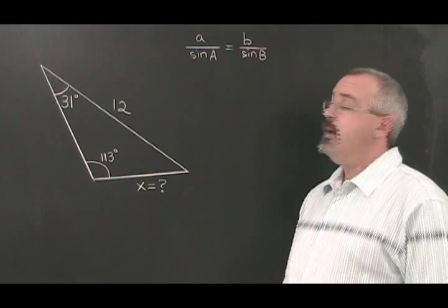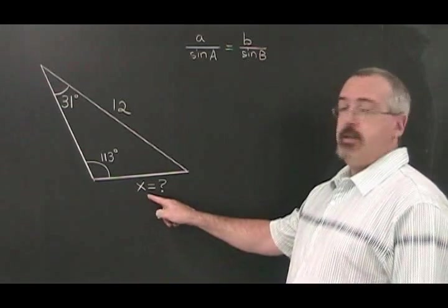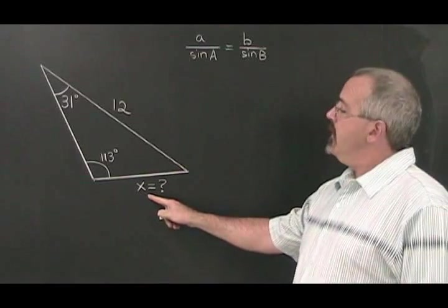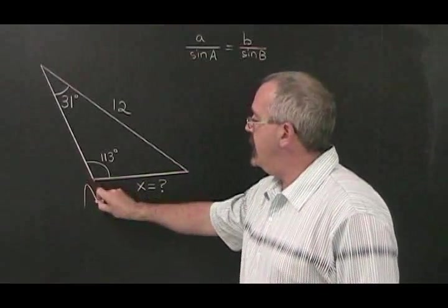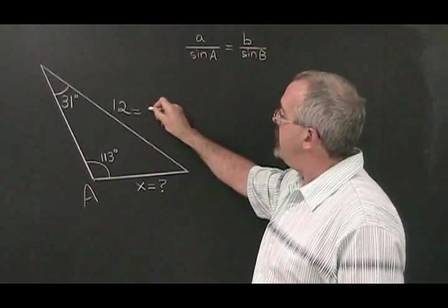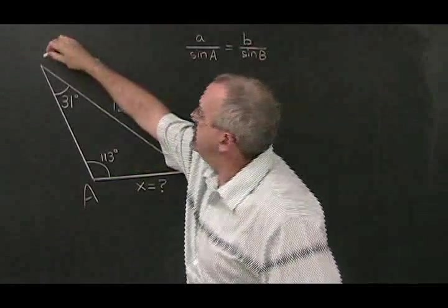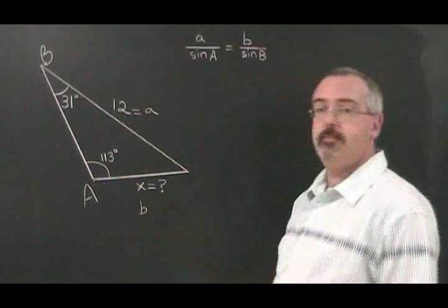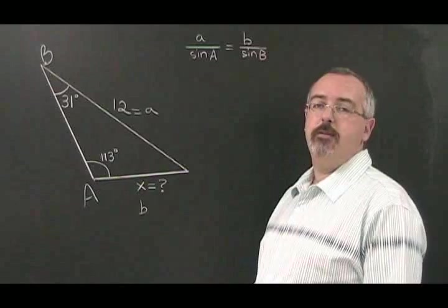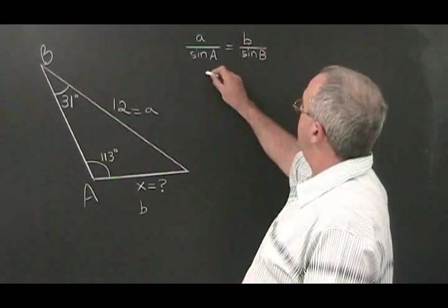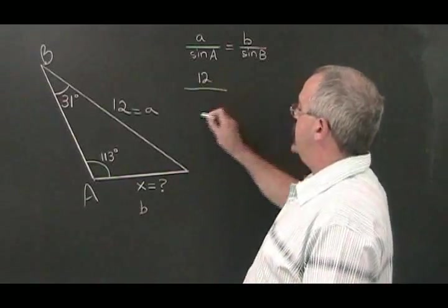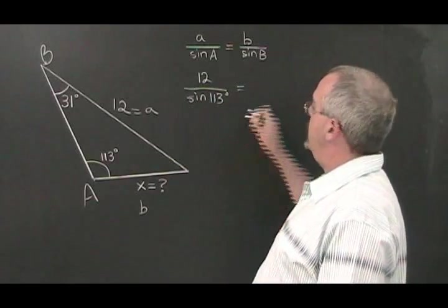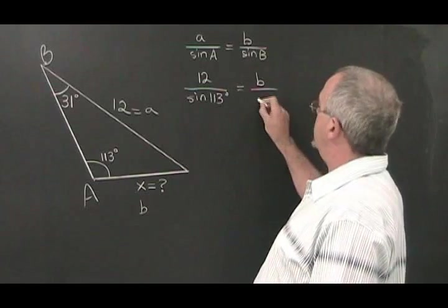In example 1, we want to know the length of this side. Applying our rules for labeling triangles, we can choose to call this angle A, which means that this must be side A. And we can call this angle B, which means this can be side B. That means we can fill in our sine law formula like this. A over sine A is equal to B over sine B.